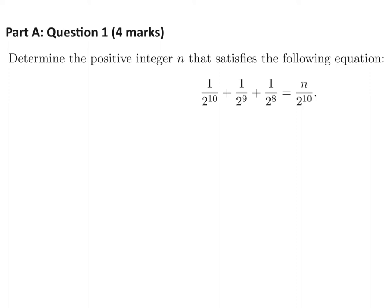Alright, so we need to get a common denominator for this. 2 to the power of 10 plus 1 over 2 to the power of 9 plus 1 over 2 to the power of 8 is equal to n over 2 to the power of 10. So 2 to the power of 10 is the common denominator.